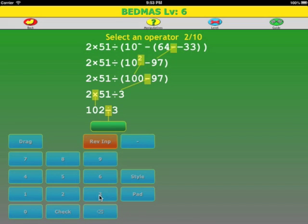3 goes into 10, 3 times. Remainder 1. 12 divided by 3 is 4.